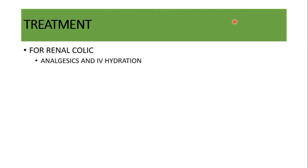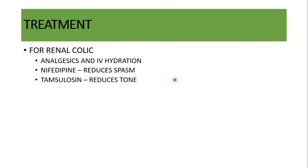When a patient comes with severe renal colic, first treat the patient with painkillers and IV hydration — for example, ketorolac. Give antiemetics to stop nausea and vomiting if present. You can give calcium channel blockers like nifedipine to reduce smooth muscle spasms of the ureter, since a stone in the ureter causes ureteral spasms and severe pain. Tamsulosin, an alpha-1 blocker, can also reduce the tone of the smooth muscle spasms so the pain subsides.